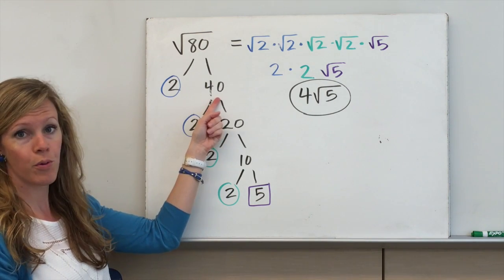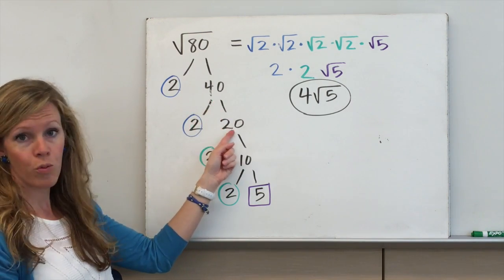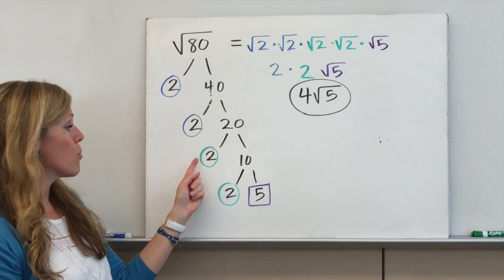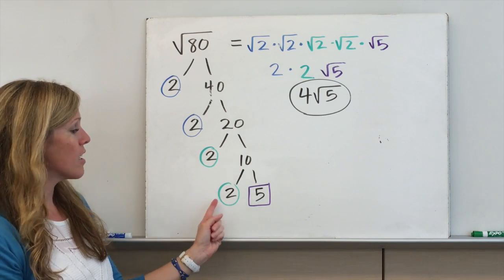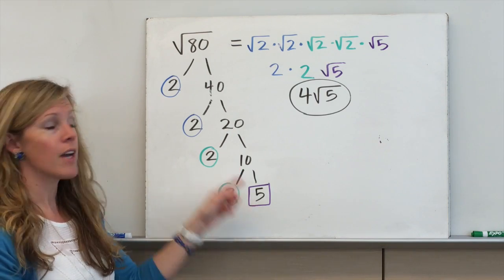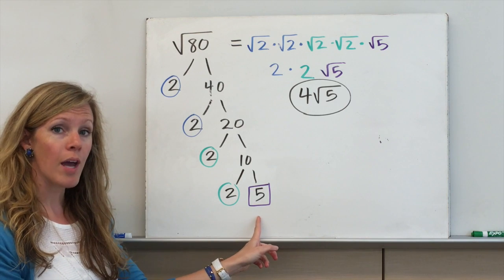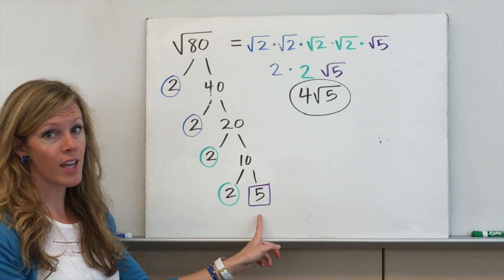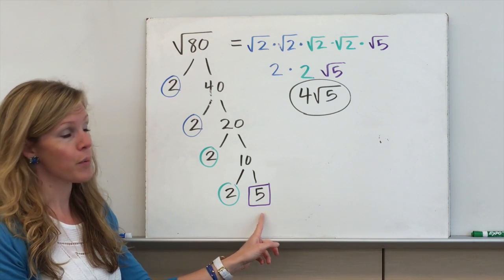So we know we've got 2 times 40. 40 is 2 times 20. 20 is 2 times 10. And then 10 is 2 times 5. Basically, I've gotten down to the prime factorization of 80 — probably something you haven't thought about in a little while.